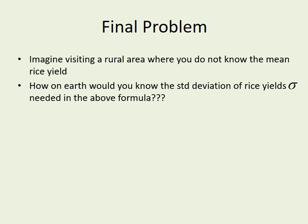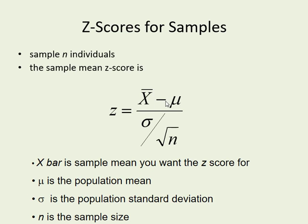Which is this: imagine you go to a rural area and you do not know the mean rice yield. How are you going to know the standard deviation of the rice yields which you need in the above formula? You don't know this but you need to know this to use the formula, so it's useless as it stands.